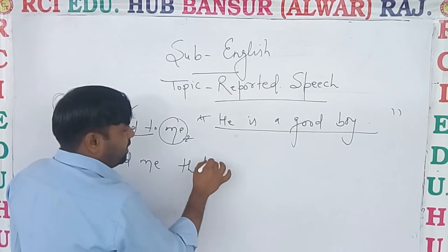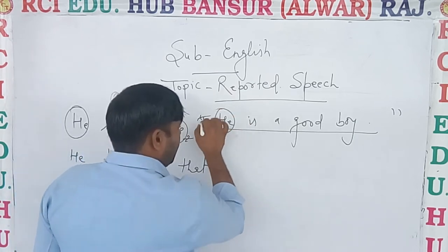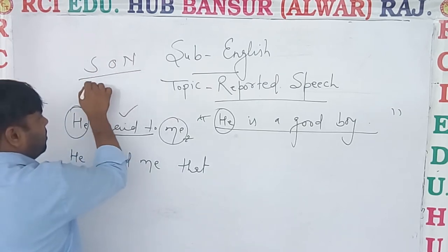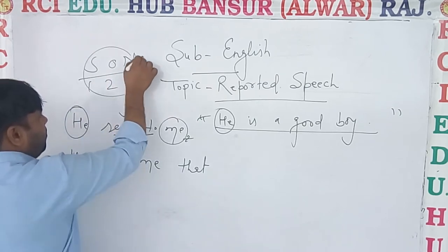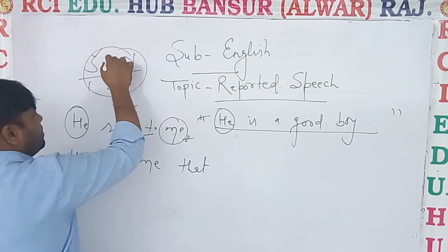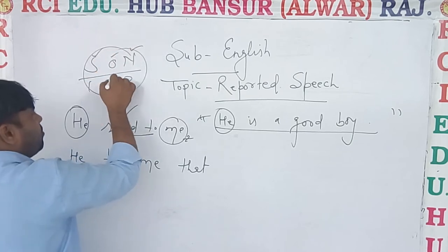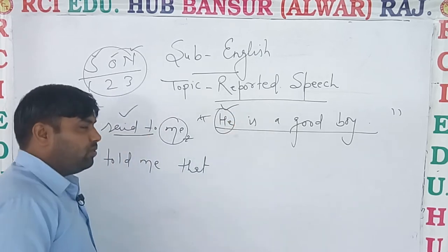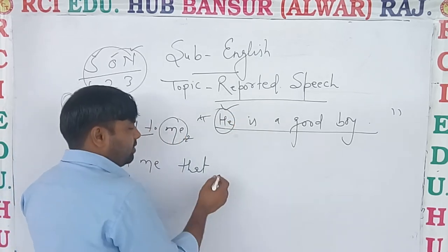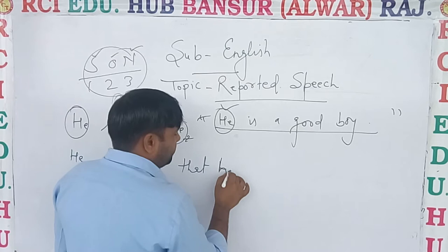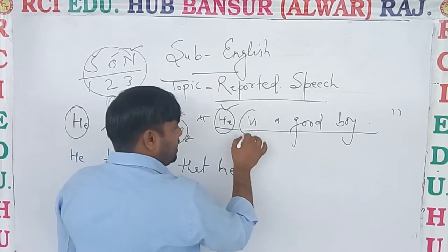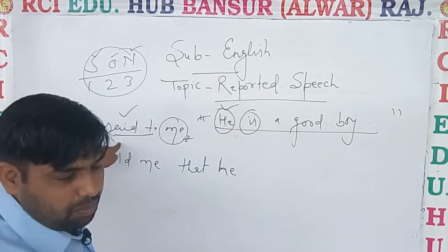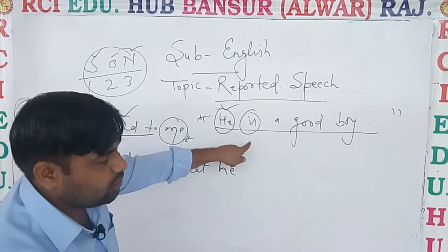We will use 'that'. He — first person, second person, third person — subject recording, object, no change. As you know, third person won't change. He will be 'he'. He is present outside, past — change into past.